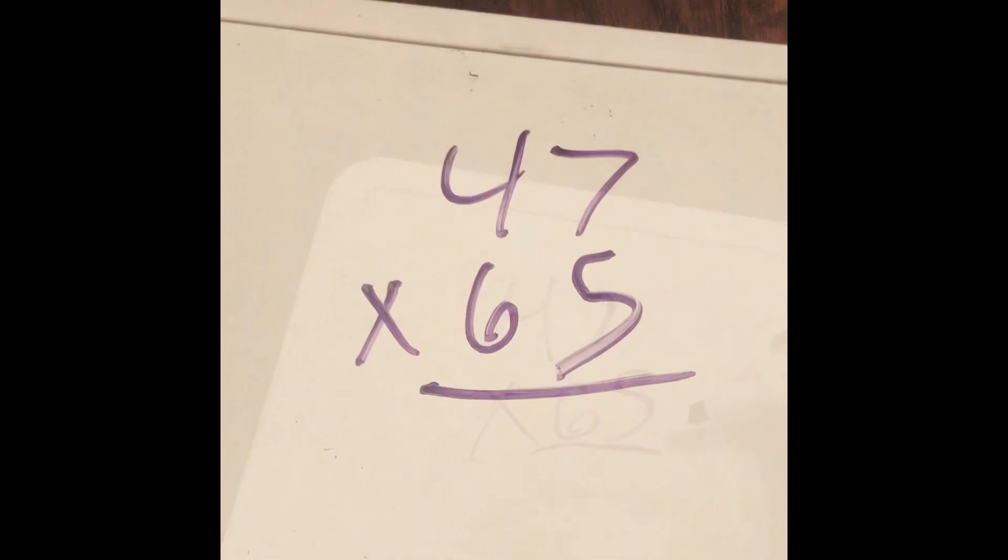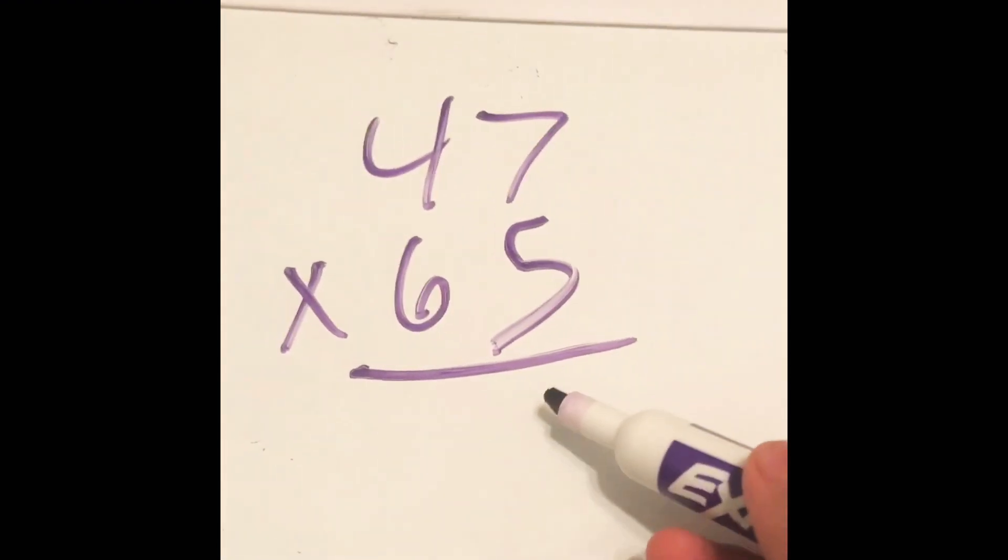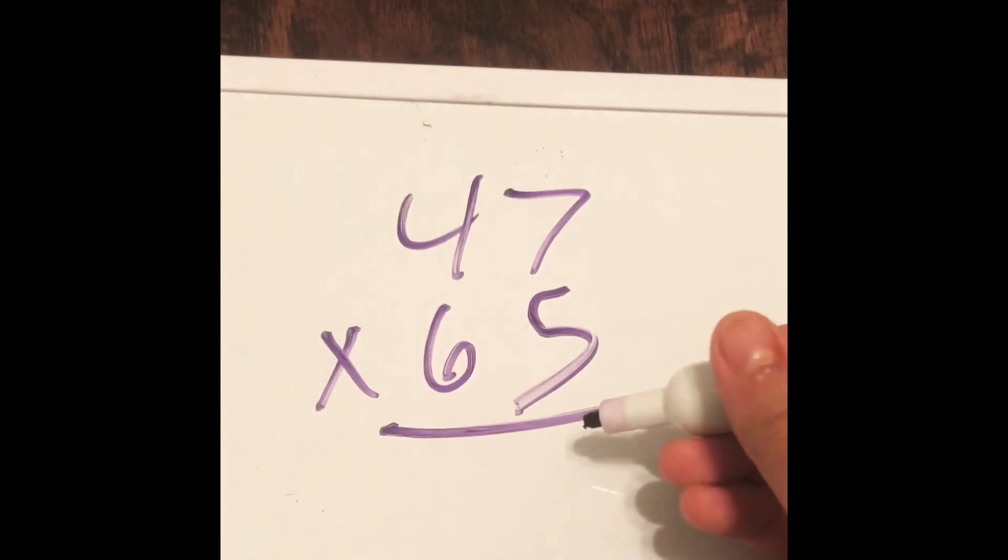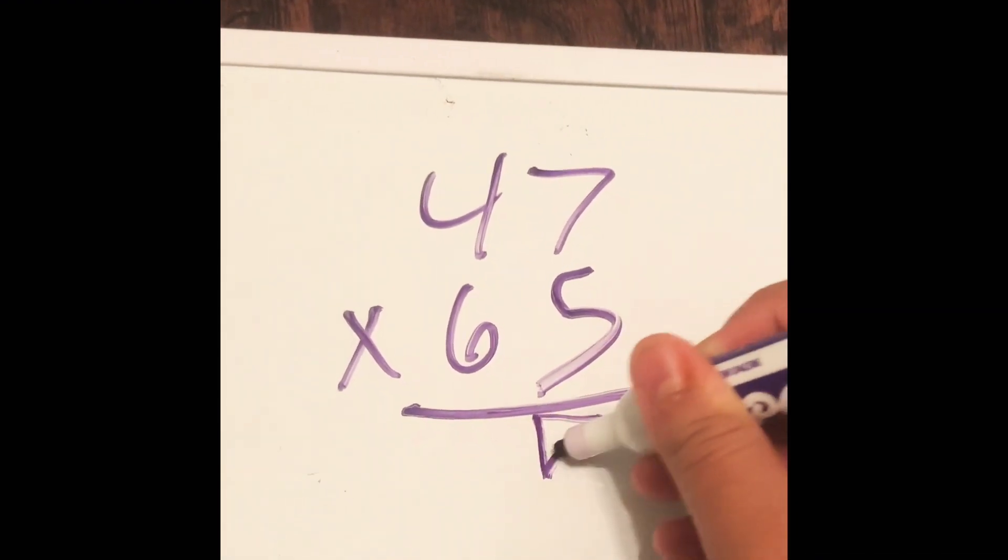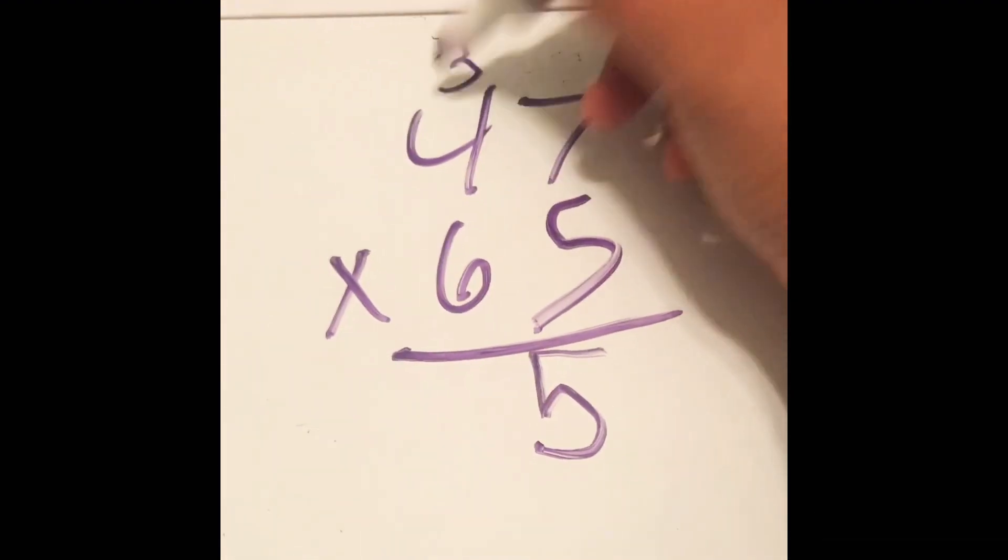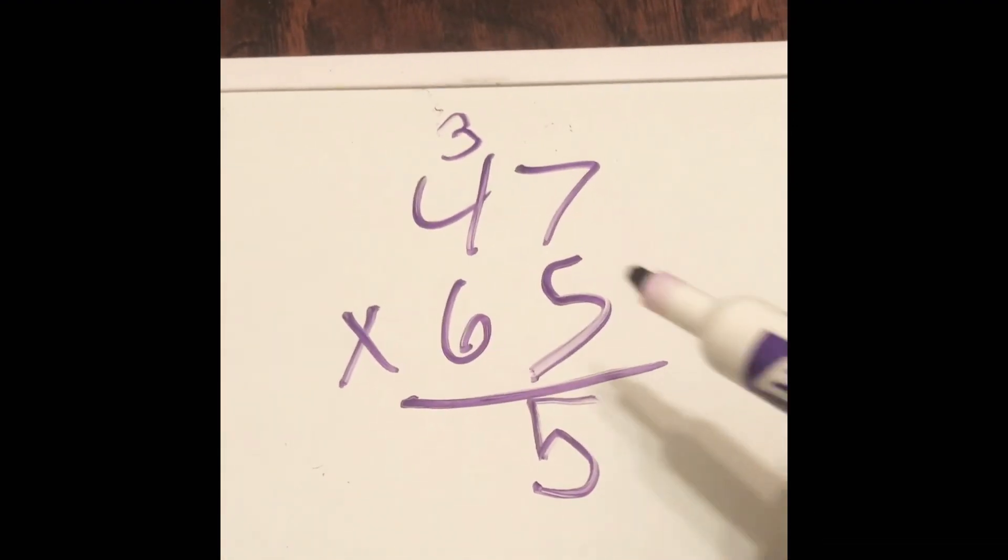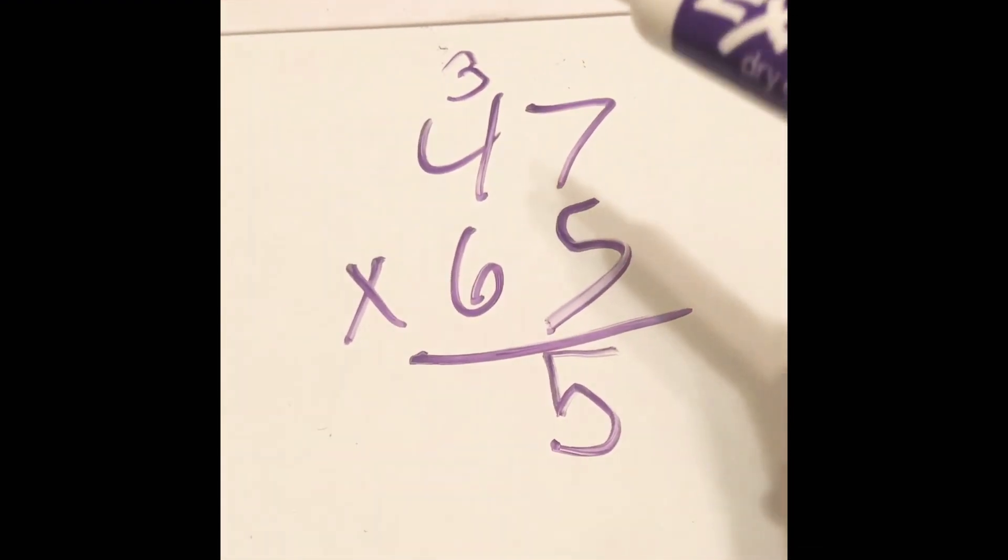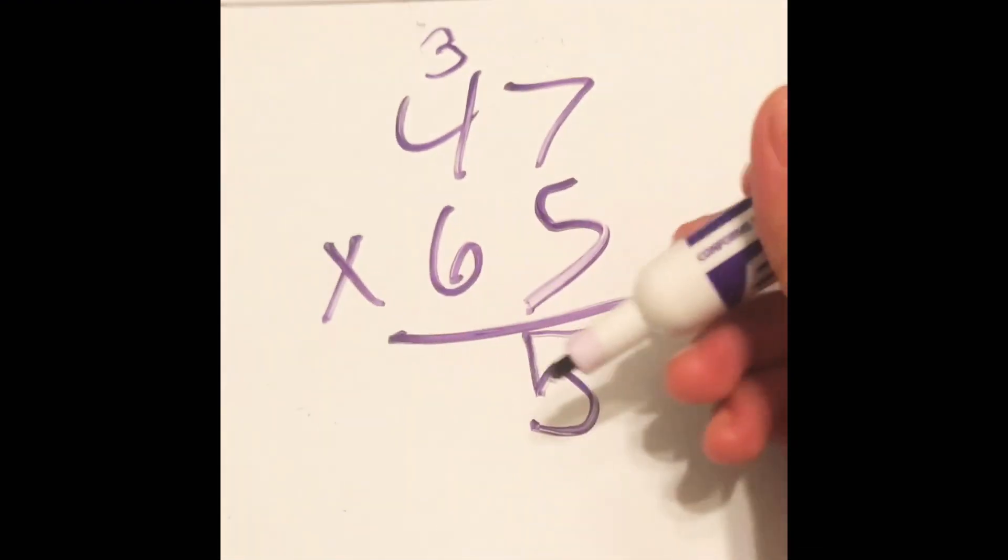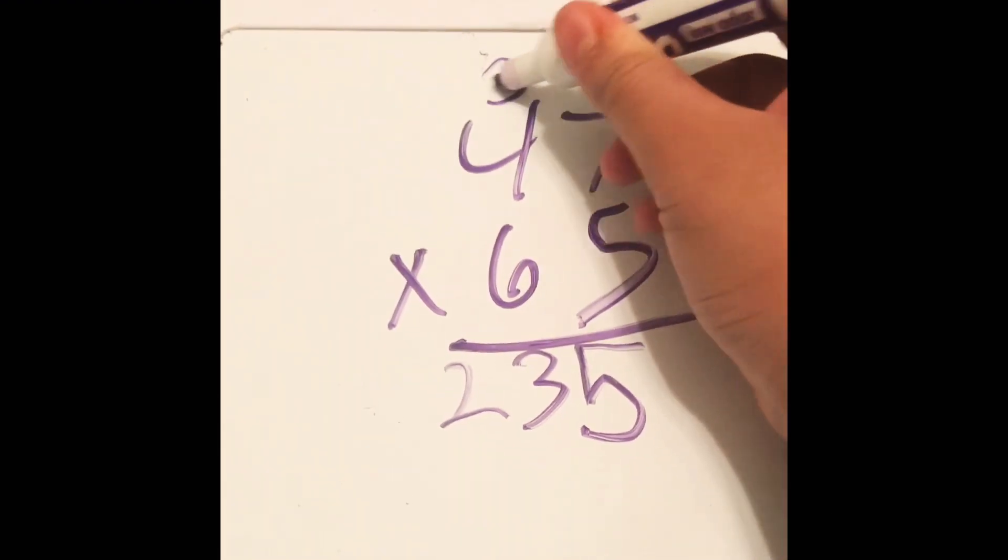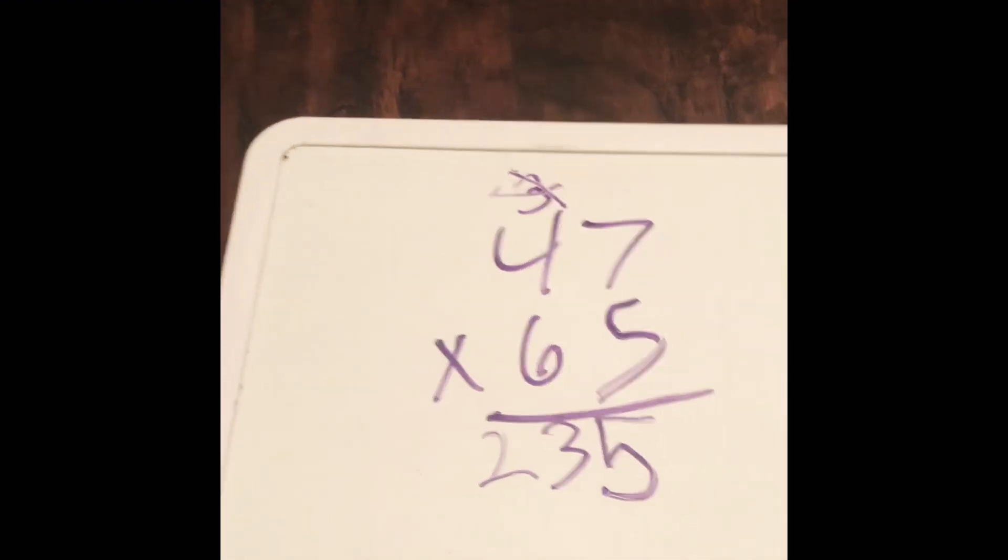First we're going to be multiplying the ones. So seven times five is 35, so we put the five down here and three right here. And then we multiply five times four which is 20, and 20 plus three equals 23. So I put 23 there. We cross the three off because we don't need it anymore.